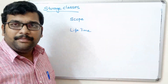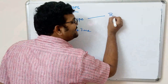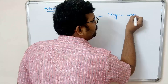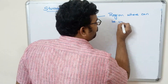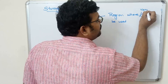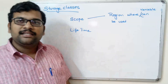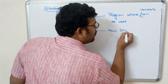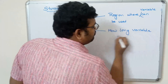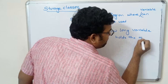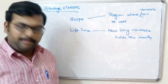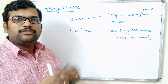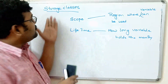So what is meant by scope and lifetime? Scope is a region where the variable can be used, and lifetime means how long the variable holds the memory. The scope and lifetime will be varying depending upon the declaration point, and that is what we call storage classes.